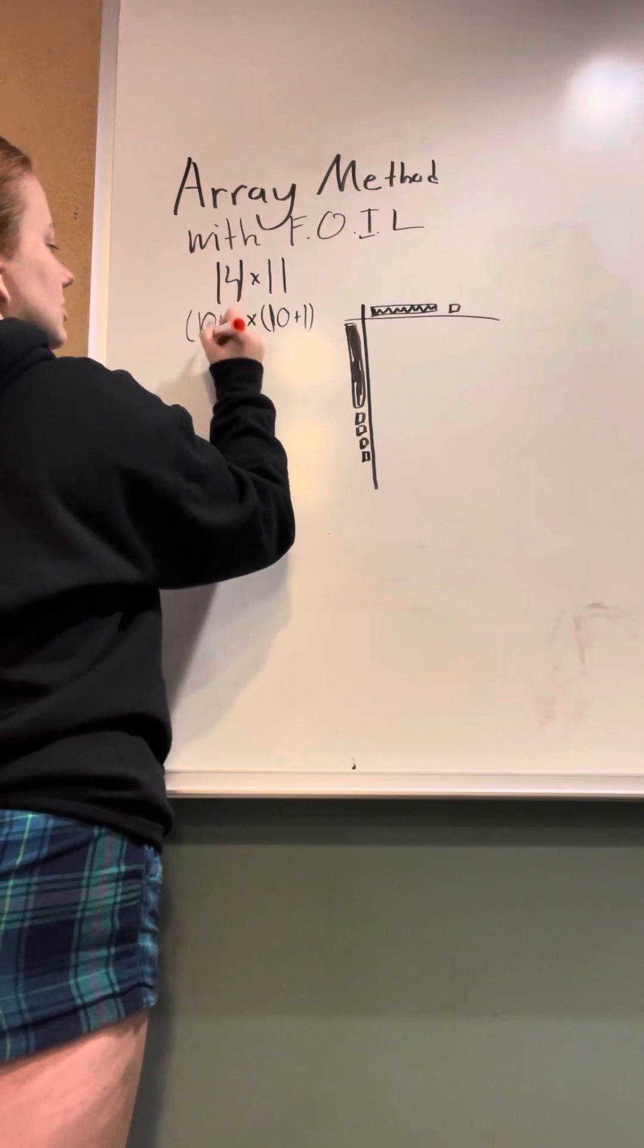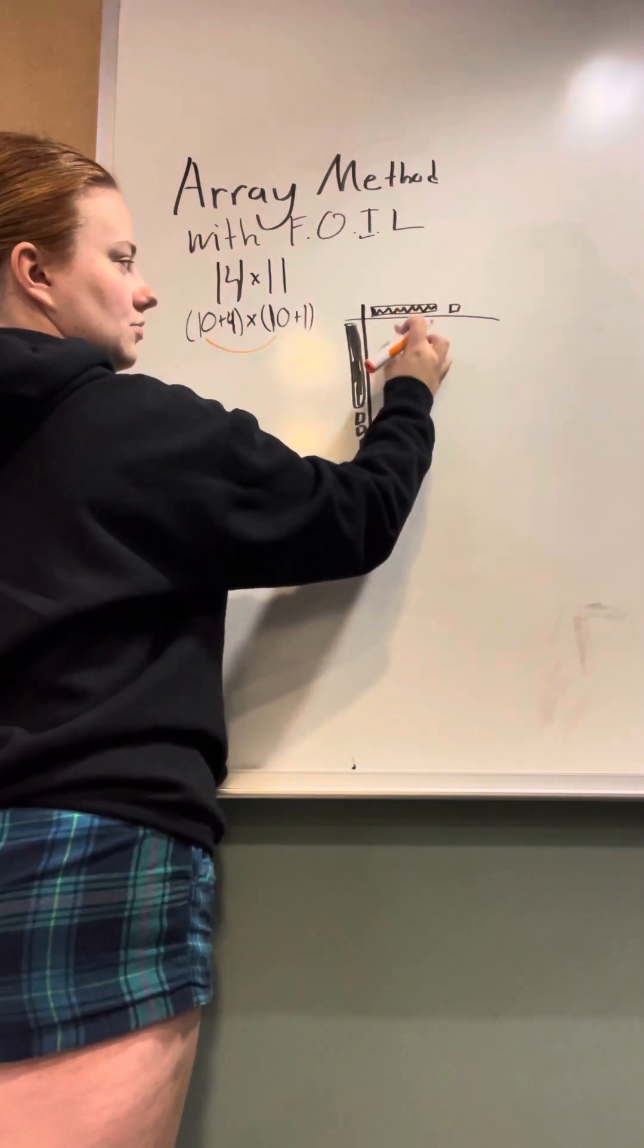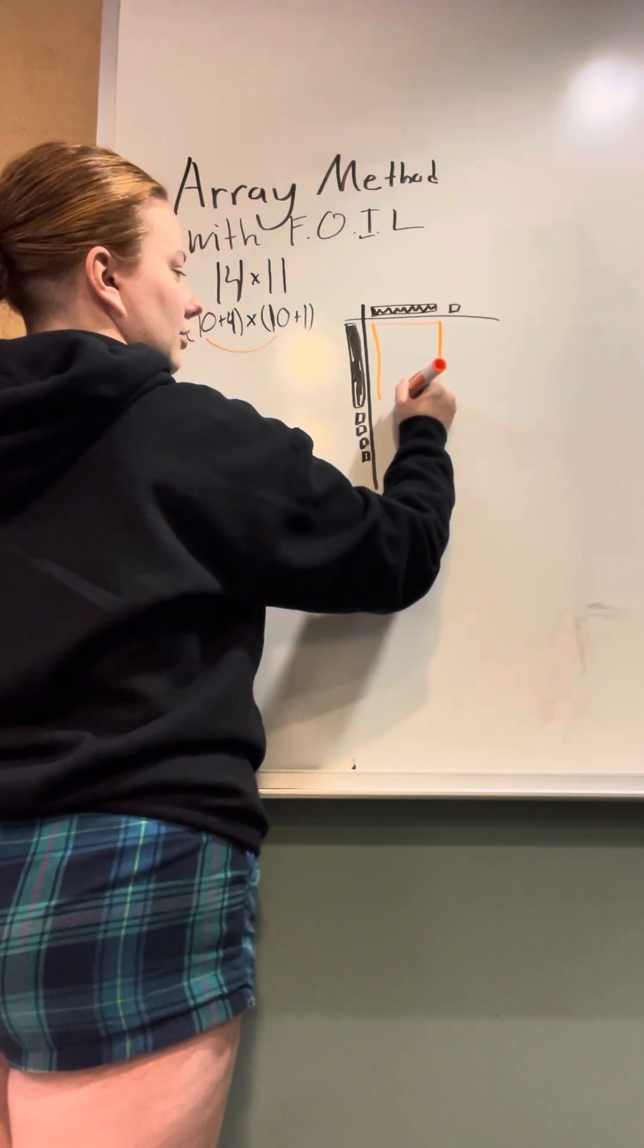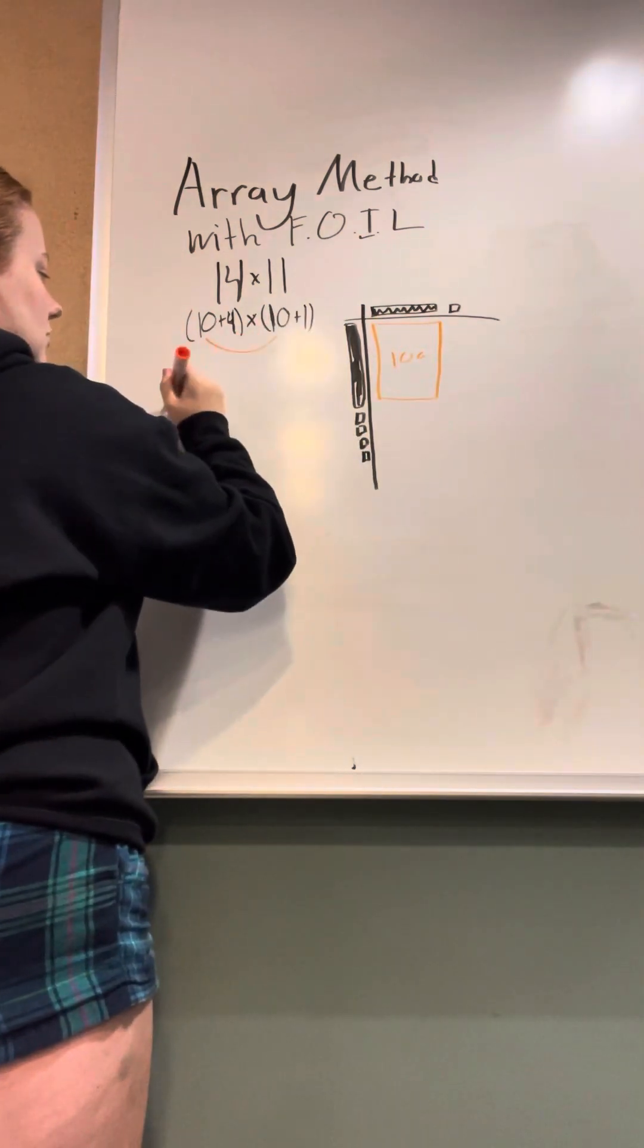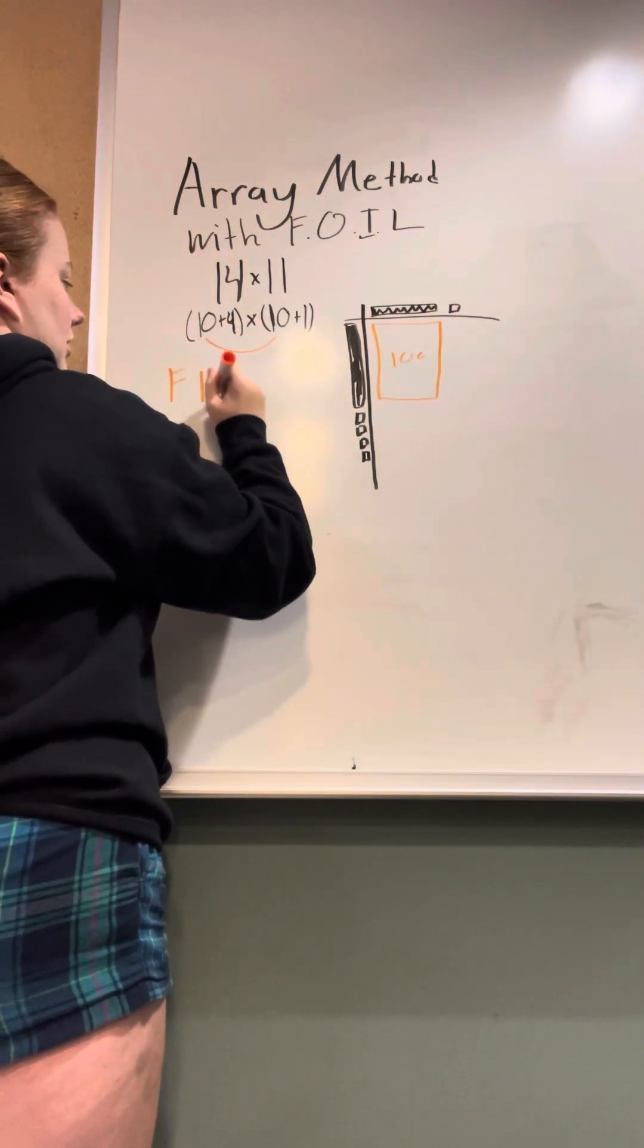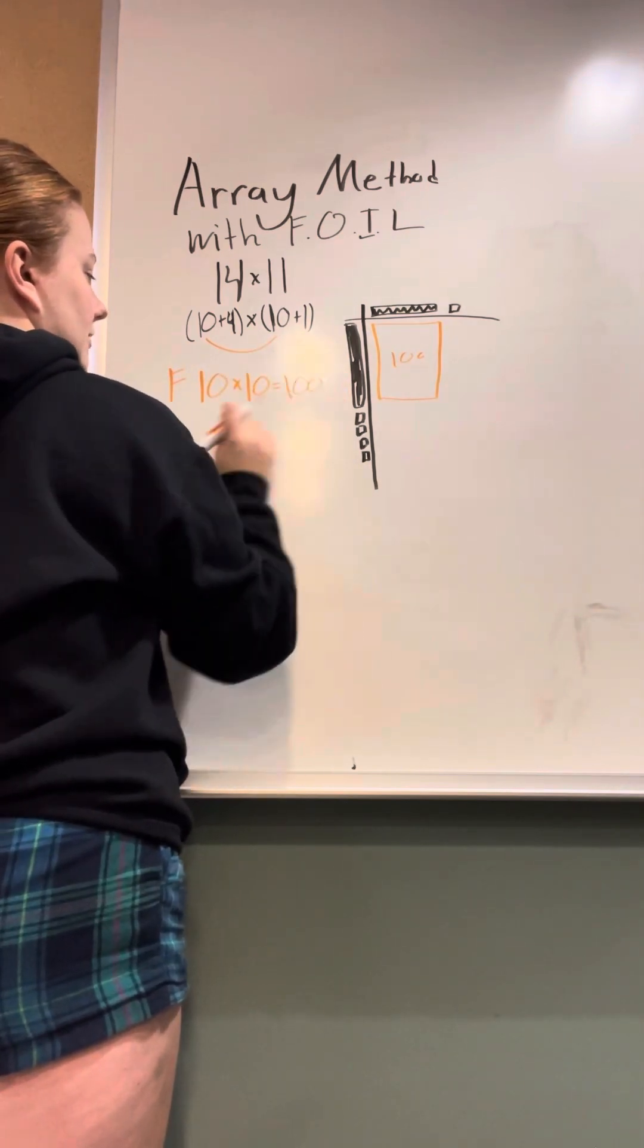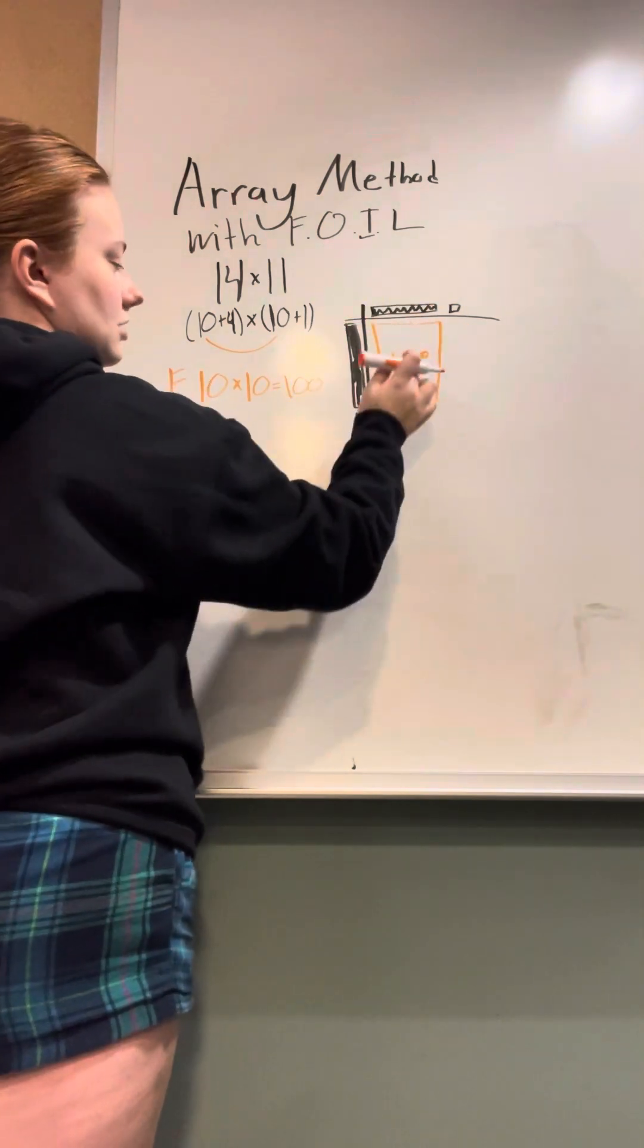So we're going to do the 10 and the 10, which translates over here to the two longs. So on the array, you're going to draw your 100, because 10 times 10, and I'll just write it out: 10 times 10 equals 100. So as you can see, 10 times 10 is 100.